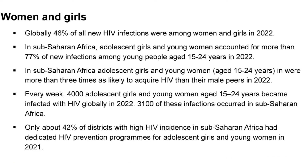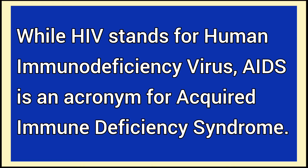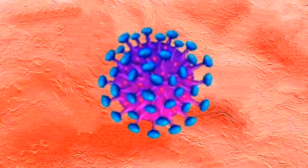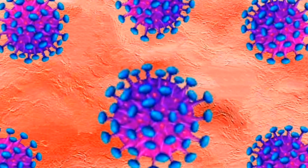It's worth noting that HIV and AIDS are two different phenomena. While HIV stands for Human Immunodeficiency Virus, AIDS is an acronym for Acquired Immune Deficiency Syndrome. HIV is the virus that causes AIDS by destroying the immune system of infected persons. People get infected with this virus when it enters their body through any of the body fluids, most especially blood and sex fluids.